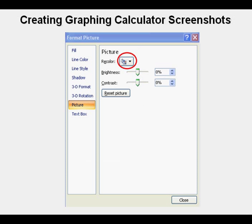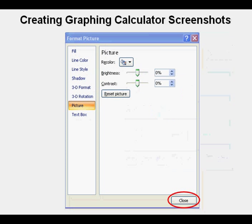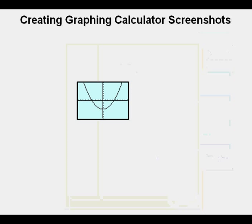You get the Format Picture dialog box. Go to Recolor. Go to the drop-down menu in Recolor. I'm going to choose this color here. Then Close. And this is what it looks like, but it's a single object with the background built-in as opposed to PowerPoint 2003 version, where it's really composed of the screenshot and the background rectangle.